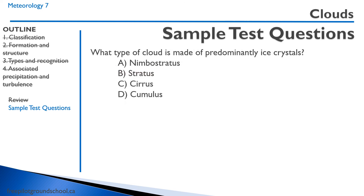Last question: what type of cloud is made of predominantly ice crystals? A — nimbostratus: not correct, those are made of small water droplets. B — stratus: also small water droplets. C — cirrus: correct, cirrus clouds are very high and made of ice crystals. D — cumulus: not correct, cumulus-type clouds are made of large water droplets or snow. That concludes this lesson on meteorology — thanks for joining me and we'll see you on our next lesson.